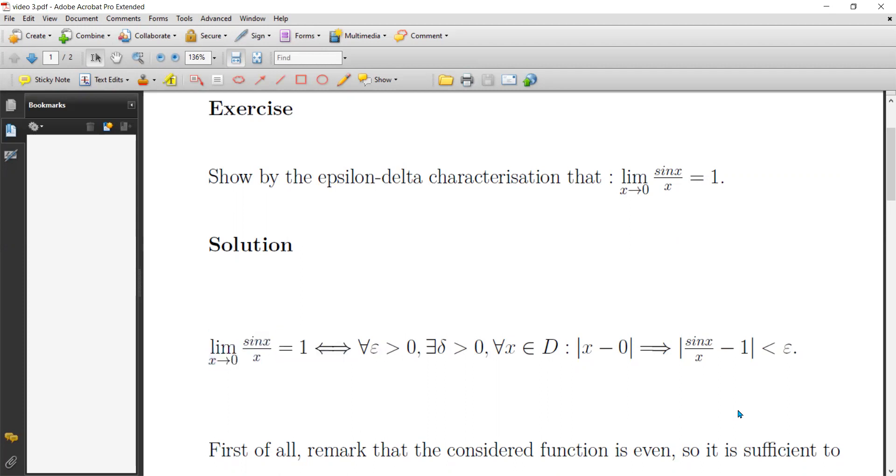This is equivalent to prove: for any given positive epsilon, we have to show the existence of delta, which is also positive, delta depends on epsilon and zero.